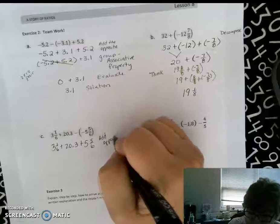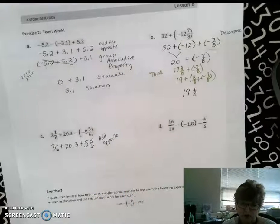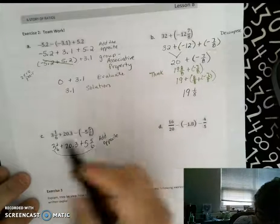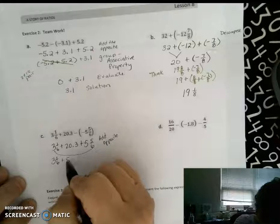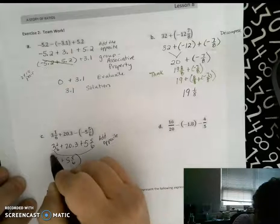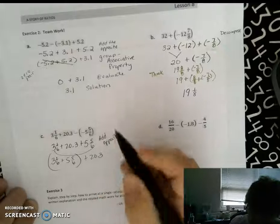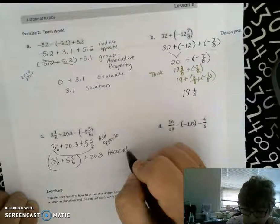I'm noticing that I have two numbers with fractions with the same denominator. So I'm going to group those two together using that associative property. So I'm going to pull these two numbers together, the 3 and 1/6th, plus 5 and 5/6ths. And 20 and 3/10ths. So I use that associative property.